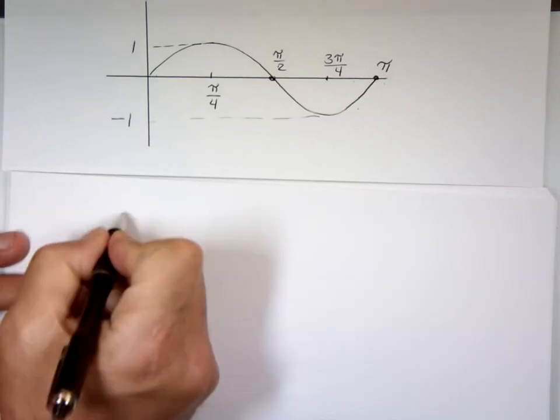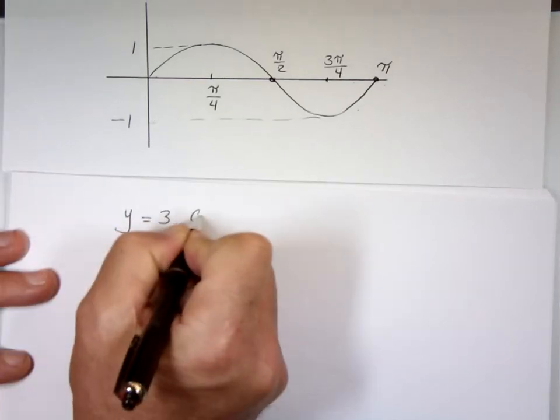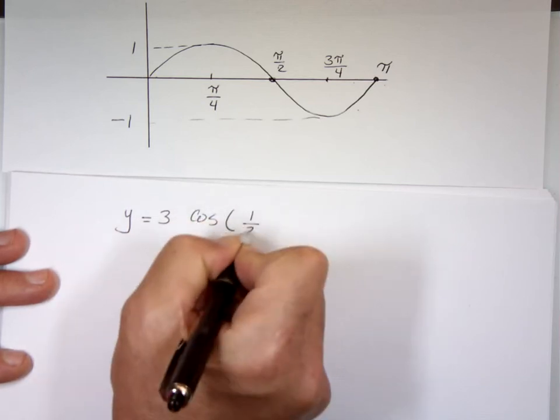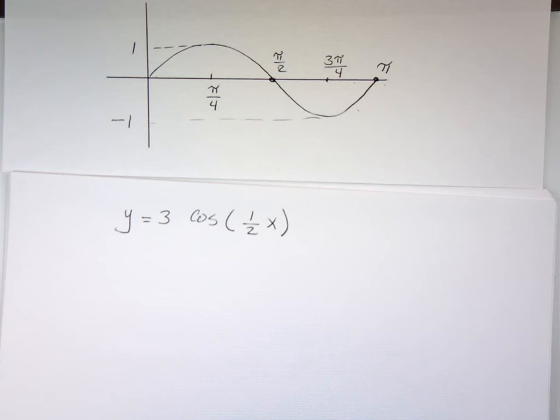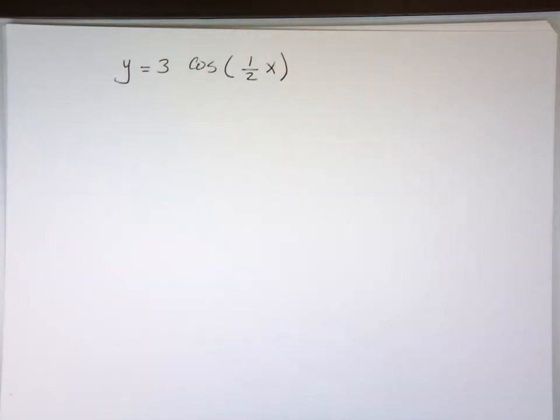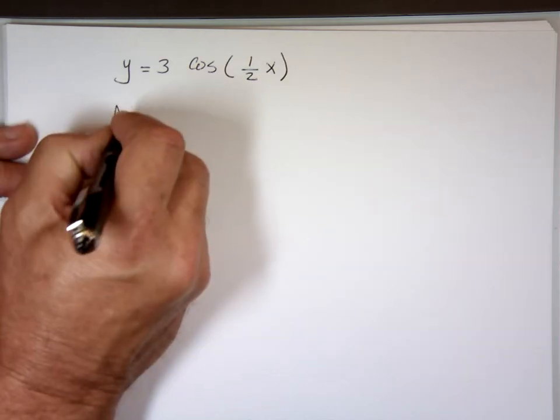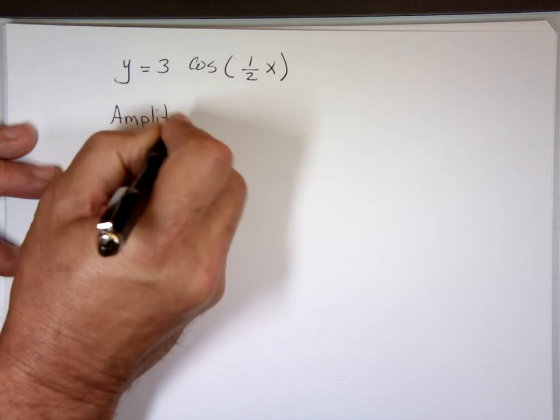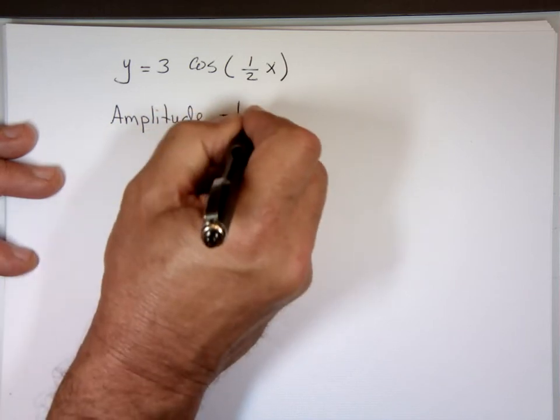And if the problem was a little bit different. Let's say I have y equals 3 cosine 1 half x. Now I want to graph it. My amplitude is the absolute value of 3, which is 3.